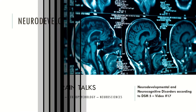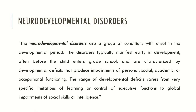According to the DSM-5, neurodevelopmental disorders are a group of conditions with onset in the developmental period. The disorders typically manifest early in development, often before the child enters grade school, and are characterized by developmental deficits that produce impairments in personal, social, academic or occupational functioning. The range of developmental deficits varies from very specific limitations of learning or control of executive functions to global impairments of social skills or intelligence.